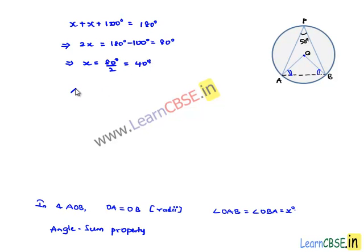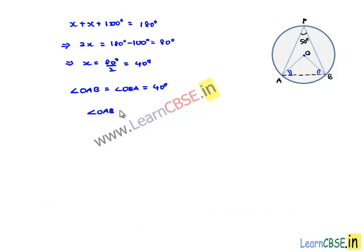Therefore, we got angle OAB is equal to angle OBA, that is 40 degrees. But he asked only angle OAB, that will be equal to 40 degrees. Therefore, the required solution is that angle AOB is equal to 100 degrees and angle OAB is equal to 40 degrees.